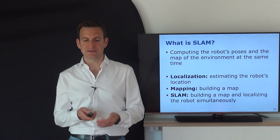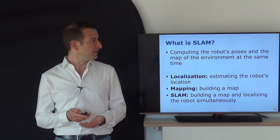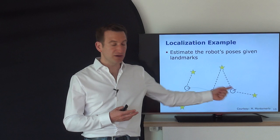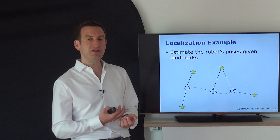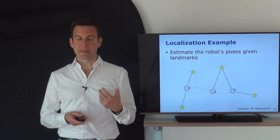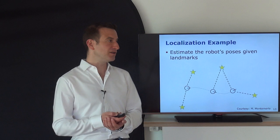That's the problem we are tackling here. We can do localization, SLAM, and mapping with landmarks or with dense representations. As a first example, consider a robot moving through the environment, indicated by a circle, with landmarks shown as stars. While the robot moves, it has a sensor to perceive where those landmarks are relative to its own location. But those observations are noisy, and the motions are also noisy.